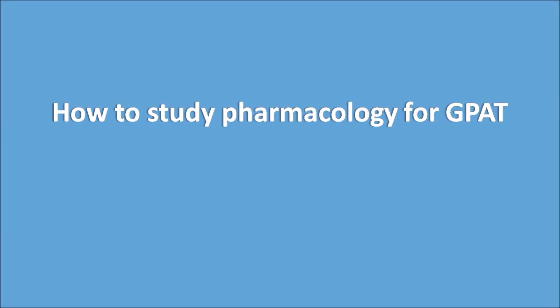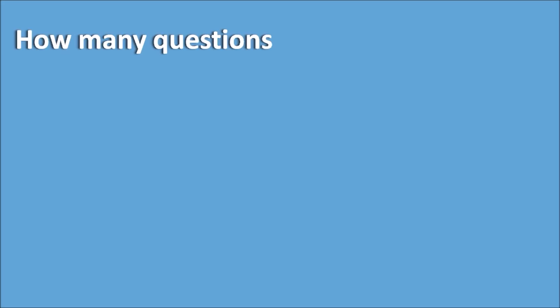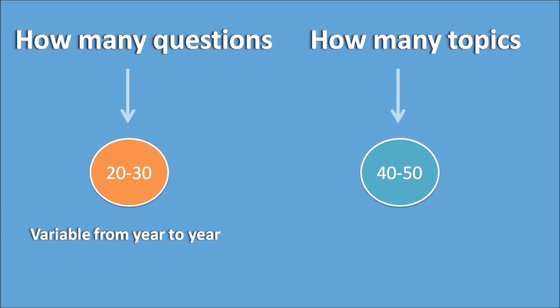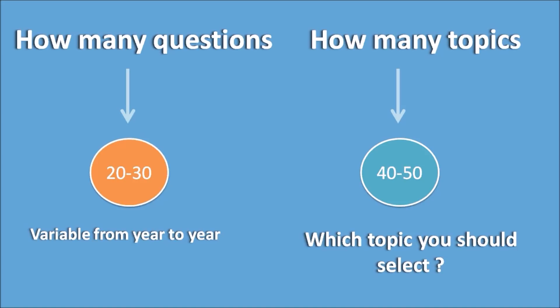How to study pharmacology for GPAD. In this video we will discuss the mechanism and side effects. There are around 20 to 30 questions from pharmacology in the GPAD, though this number varies from year to year. You have to study around 40 to 50 topics, so you need to select the right topics to get a good score.